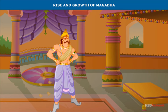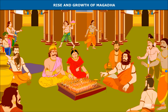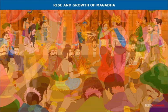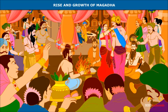Marriage alliances: Bimbisara first strengthened his position through marriage alliances. He took three wives from neighboring ruling families. One was the princess of Kosala, who brought the territory of Kashi as dowry, which yielded large revenue. His second wife Chellana was a Licchavi princess, and his third wife was the daughter of the chief of the Madra clan of Punjab. These marriage alliances increased the prestige of Magadha and helped it expand westwards and northwards.